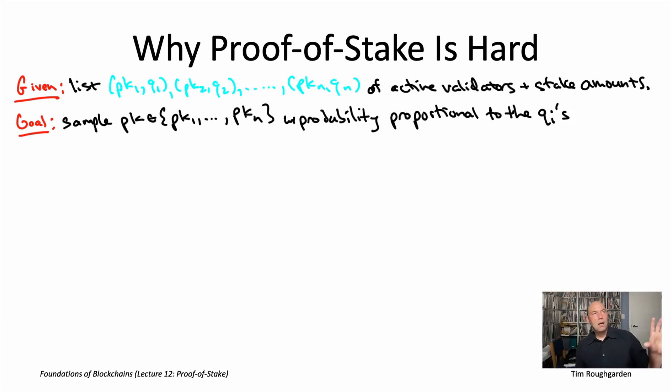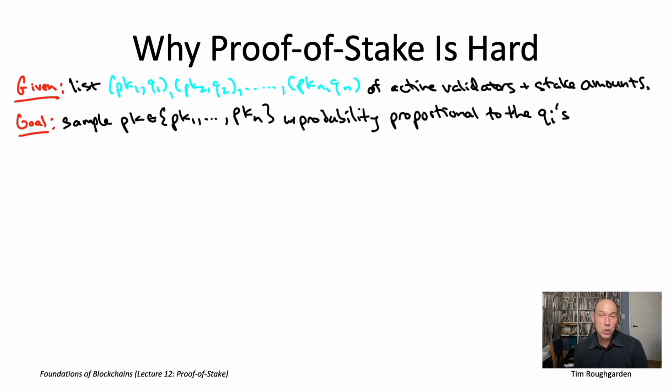For example, if you're one of the validators, and amongst all of the locked up stake, 1% of it is owned by you, then you would like to be selected with 1% probability.